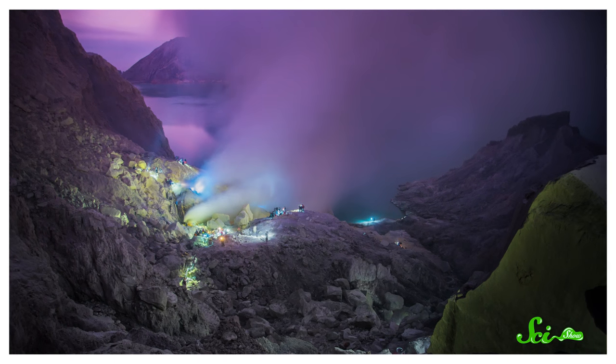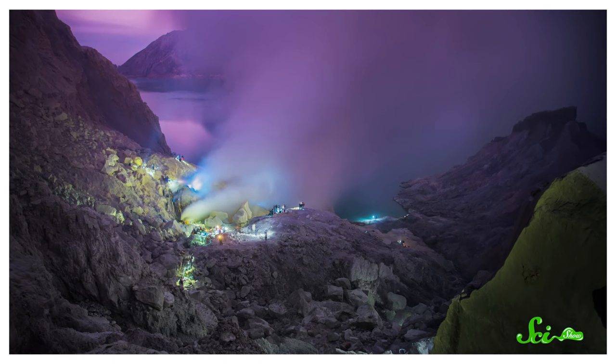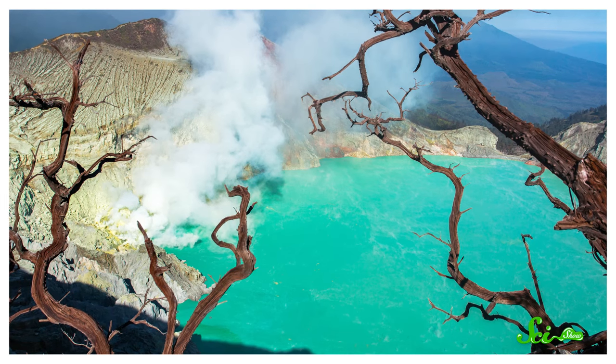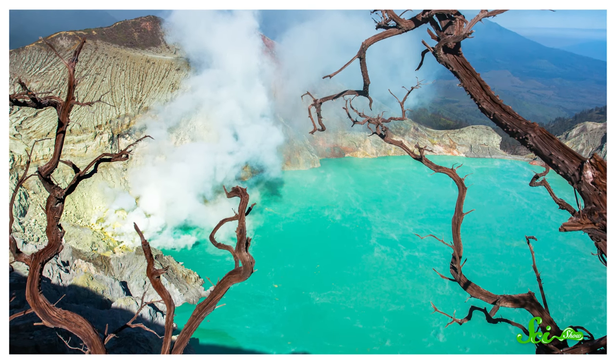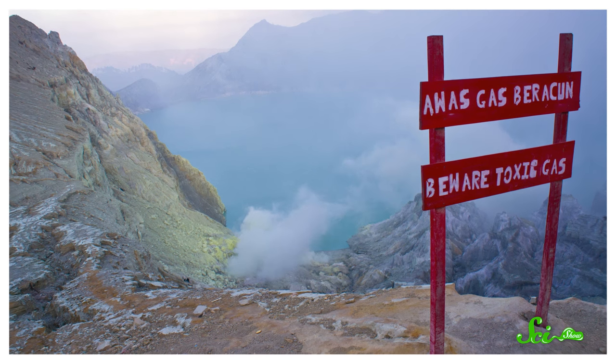So Kawa Ijen owes its incredible colors to sulfur compounds, whether they're burning or dissolved in the lake with some metals. Those two different kinds of chemistry make this weird place a beautiful and deadly destination.